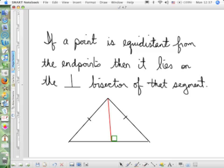The next theorem is the converse of the first theorem. The first theorem said that if a point is on the perpendicular bisector, then it is the same distance to the endpoints. The next one says, if the point is equidistant from the endpoints of a segment, then it lies on the perpendicular bisector.